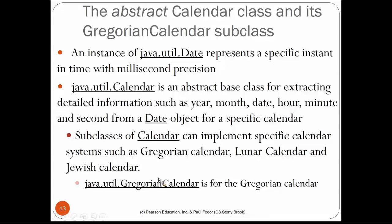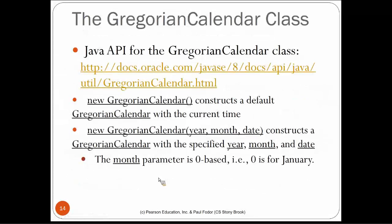The GregorianCalendar constructors include: a default constructor for the current time, and one that takes year, month, and day. For year and day, values start from 1, but month is zero-based — 0 for January, 1 for February, up to 11 for December. This is consistent with Java's convention of starting indices at zero.